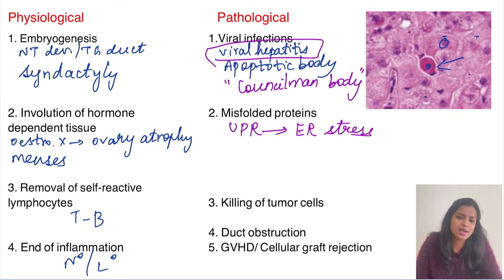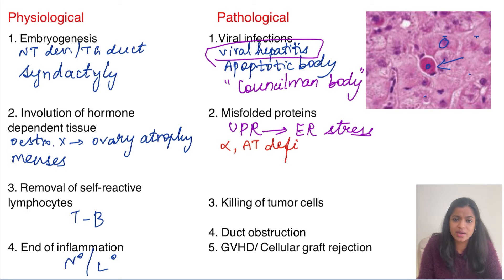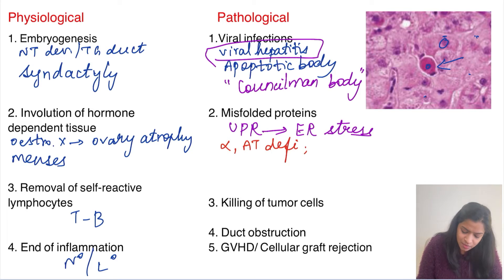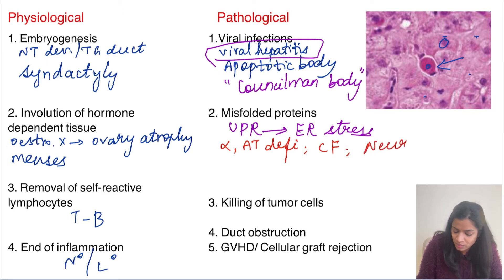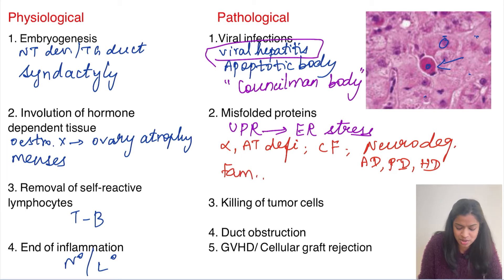Some diseases in which misfolded proteins are implicated as pathogenesis include: alpha-1 antitrypsin deficiency (a liver and lung disease — in lungs it results in emphysema), cystic fibrosis, and neurodegenerative disorders like Alzheimer's disease, Parkinson's disease, and Huntington's disease. One other example is familial hypercholesterolemia.